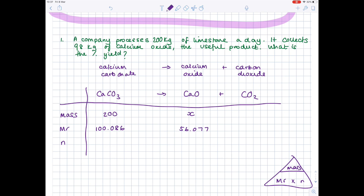Now we can work out the number of moles of calcium carbonate using our formula triangle: mass divided by Mr, so 200 divided by 100.086, giving 1.998 moles. Check the balanced equation — there are no big numbers in front of the formulae, so we can copy that number directly across as the moles of calcium oxide. We have the Mr and the moles, so mass equals moles times Mr, giving X = 112 kg.